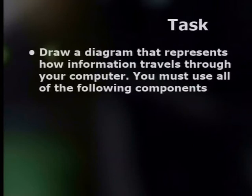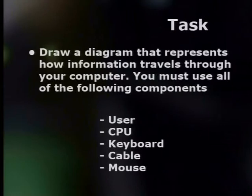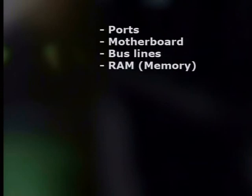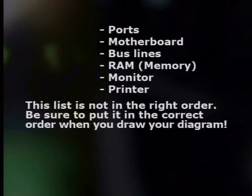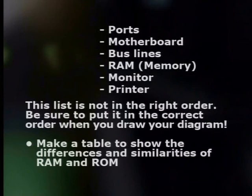Now for your task: draw a diagram representing how information travels through your computer, using all of the following components — user, CPU, keyboard, cable, mouse, ports, motherboard, bus lines, RAM memory, monitor and printer. Note that this list is not in the right order, so be sure to put it in the correct order when you draw your diagram. Finally, make a table to show the differences and similarities of RAM and ROM. That's it for this lesson — join us next time when we'll be taking a closer look at output devices. Don't forget to visit our website for more information. Bye-bye.